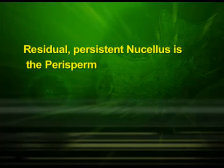Occasionally, in some seeds such as black pepper and beet, remnants of nucellus are also persistent. This residual persistent nucellus is the perisperm. Integuments of ovules harden as tough protective seed coats. The micropyle remains as a small pore in the seed coat, which facilitates entry of oxygen and water into the seed during germination.